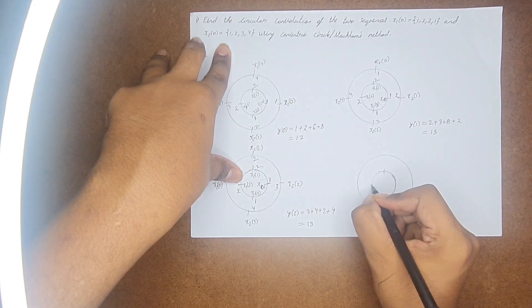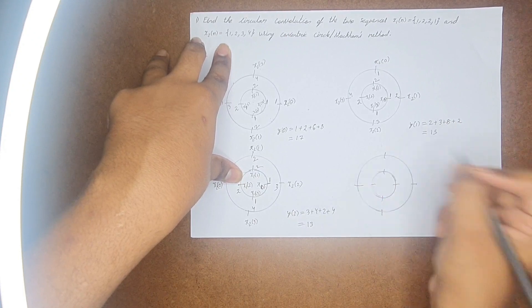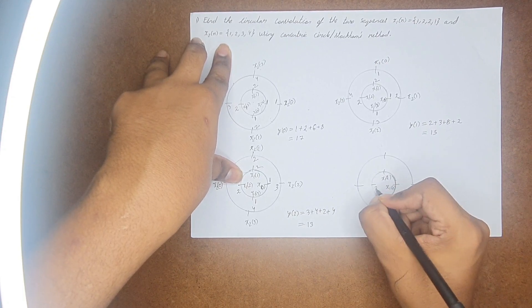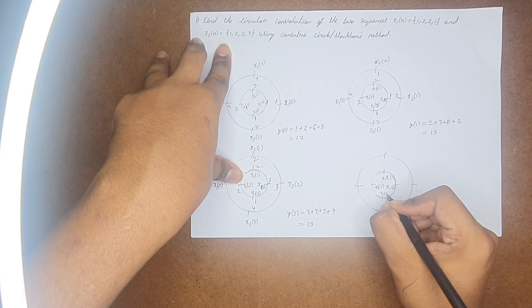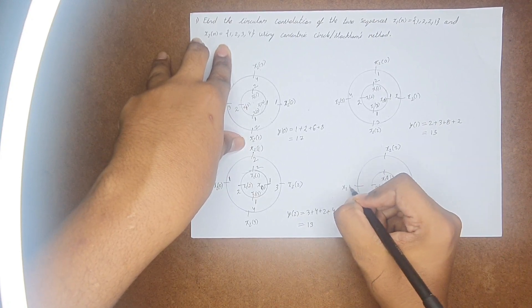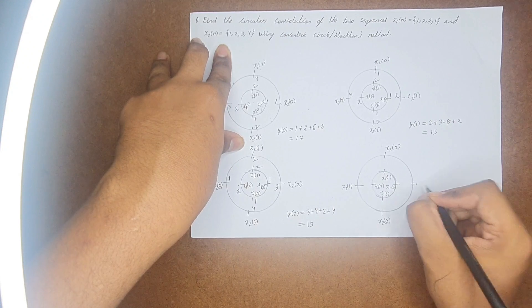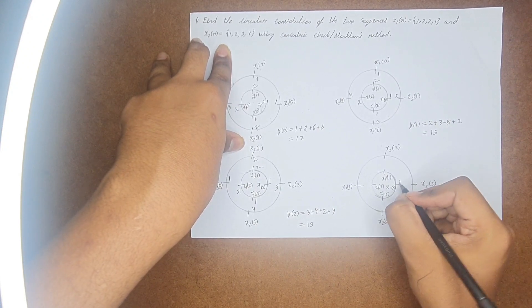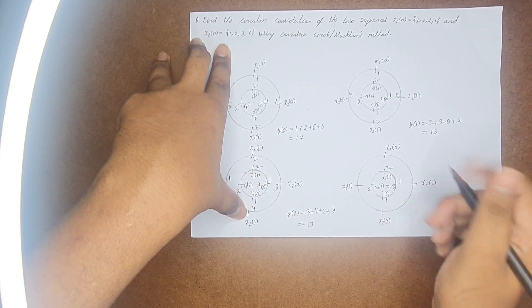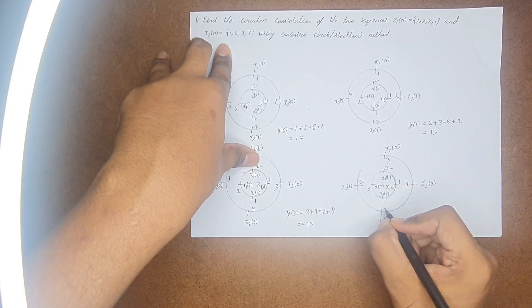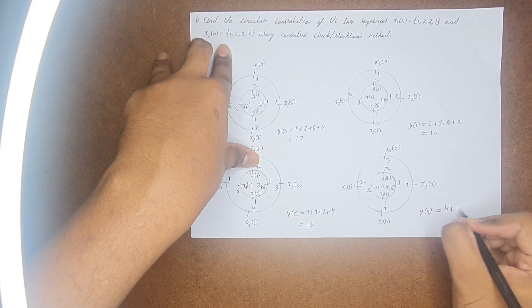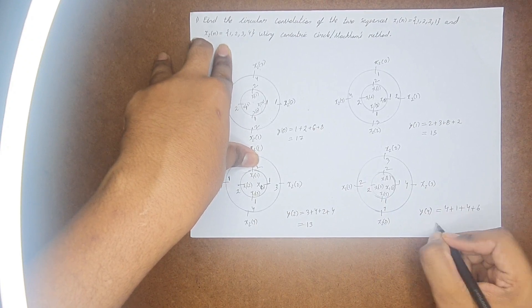Similarly, let us find the last value also. This is x1(0), x1(1), x1(2), and this is x1(3). Similarly, if I move this here, this will be x2(2), this is x2(1), this is x2(0), and this is x2(3). Now again, the values: this is 1, 2, 2, and this is 1. If I write the outer values: 3, 1, 4. So, from this y(3) will become 4 plus 1 plus 4 plus 6, which is nothing but 15.